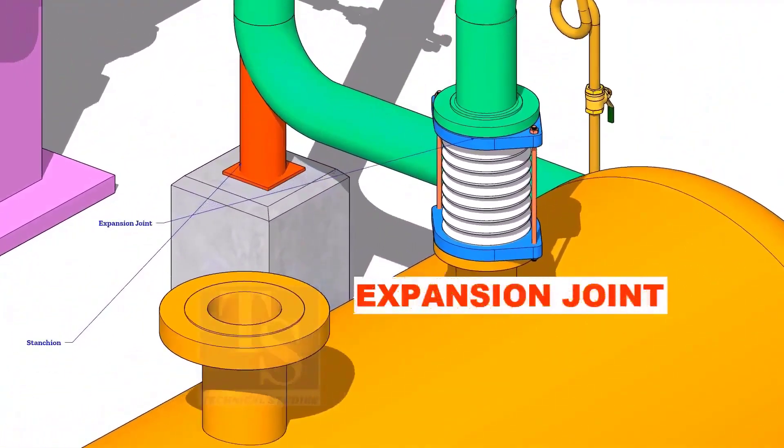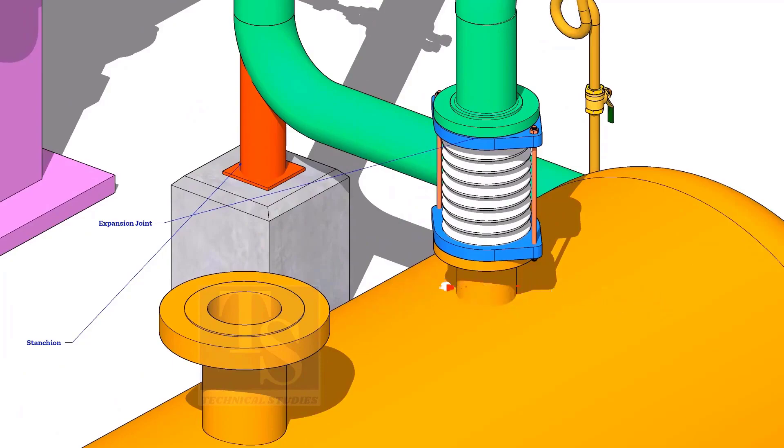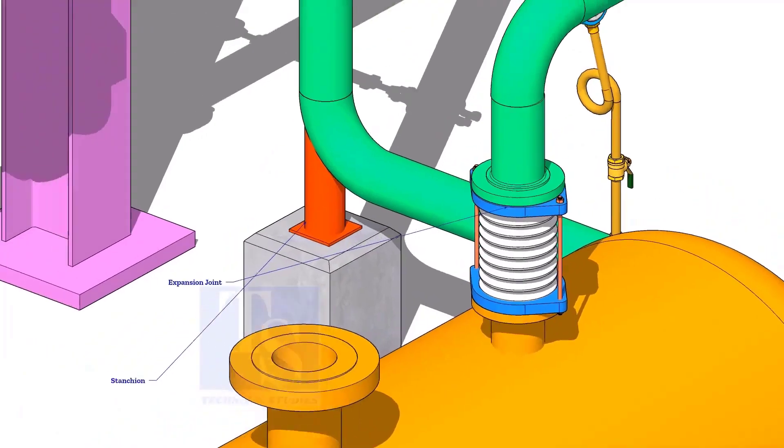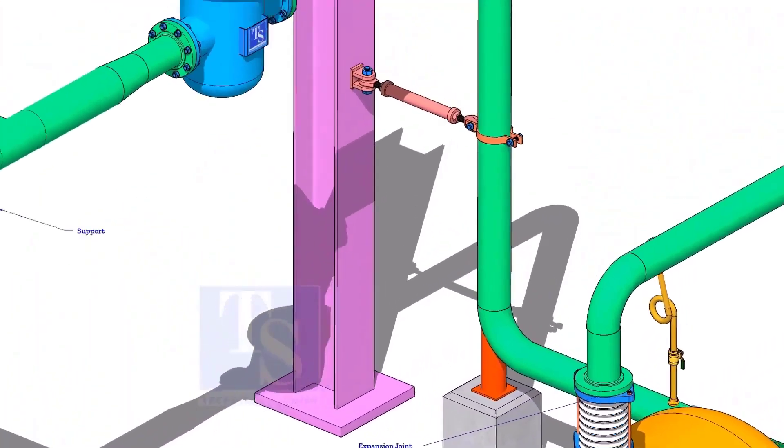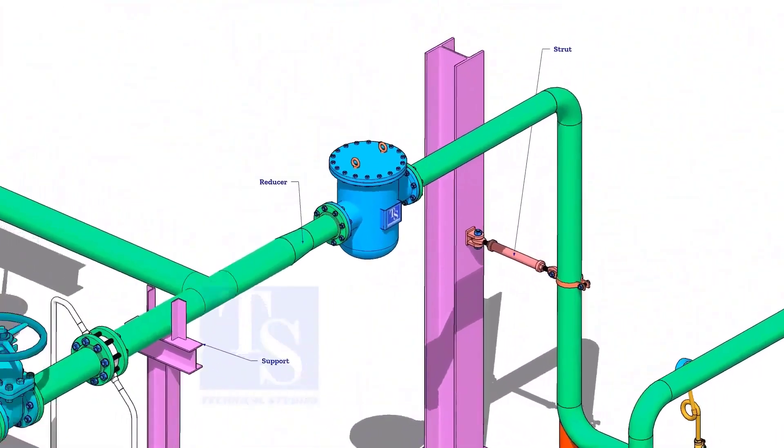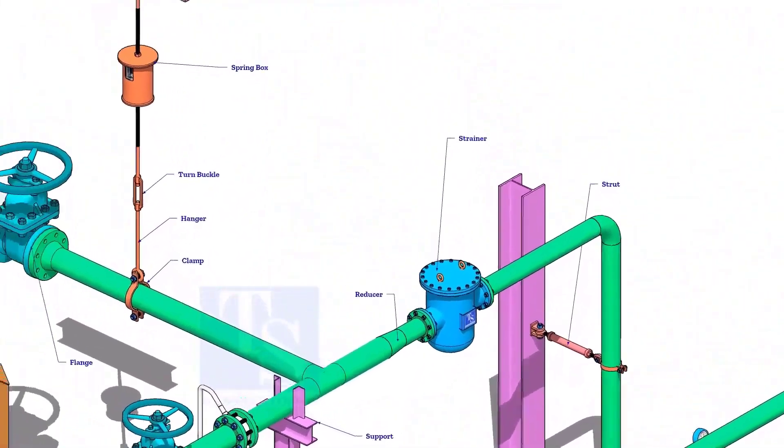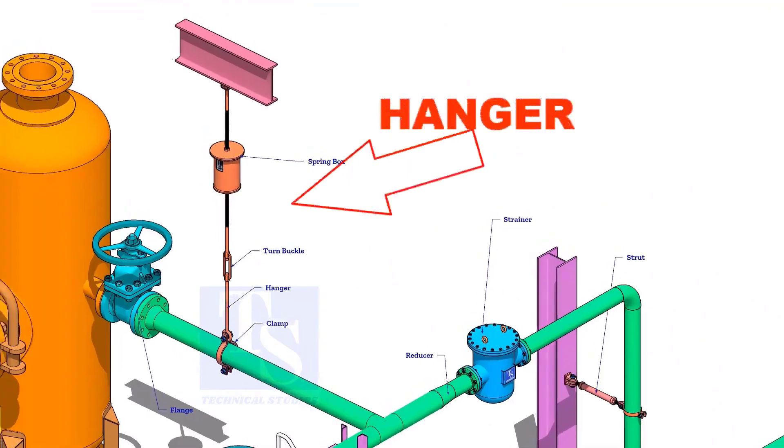Additional piping components include Expansion joints and Hangers.